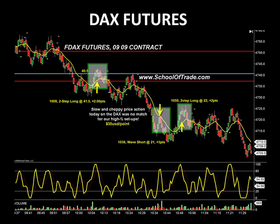We only were able to grab a couple of points off each trade. On the DAX at $35 per point, they quickly add up — but this was not a very big morning by any means. 10:08 this morning was a two-step long counter-trend trade pattern. Entry was at 41.5 for two points. On a counter-trend trade, I'm looking to take profit quickly, and we got pretty much every bit of this long trade taken out of the market before it came right back around and took us out at our entry point.